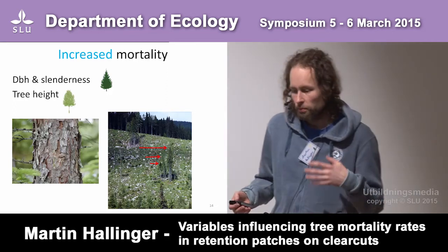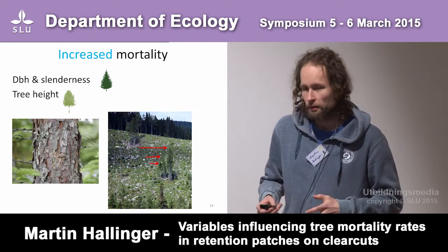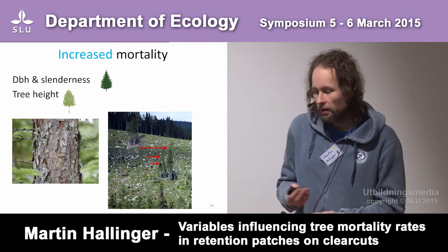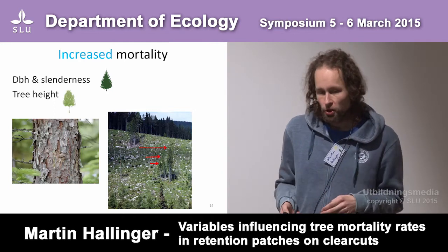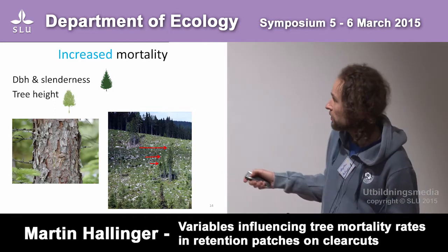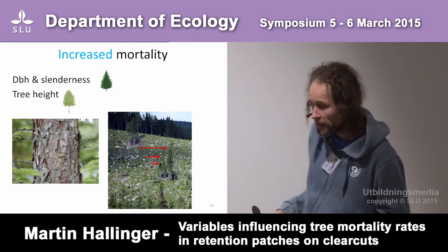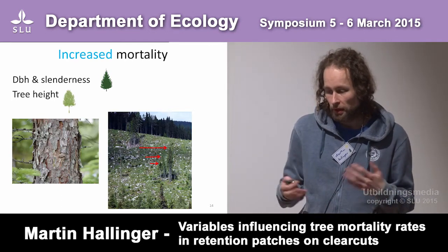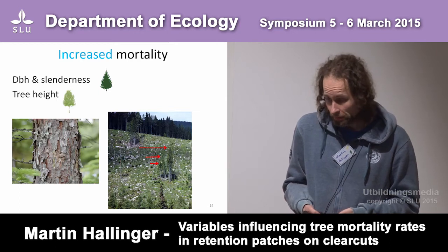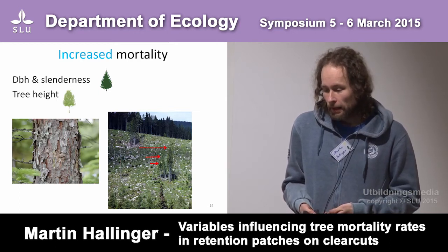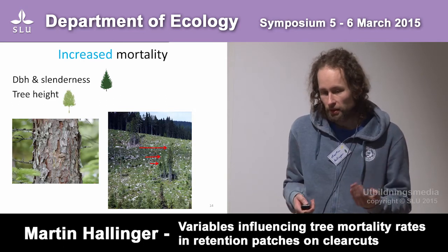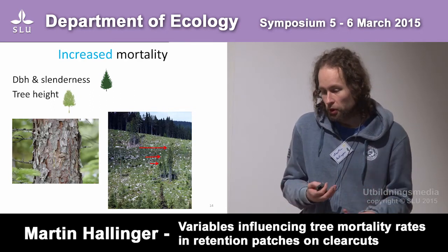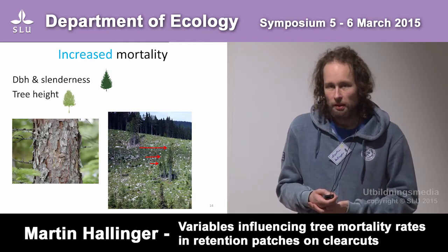Most people would probably think first that if you're a big tree with a large diameter at breast height — DBH — you should be prone to higher wind pressure, with greater leverage because you're higher above the ground, and therefore more likely to die. But we found this to be true only for spruce trees, not for pine and birch. Tree height was the only variable significantly increasing mortality, but that was only for birch — which was a bit unexpected.